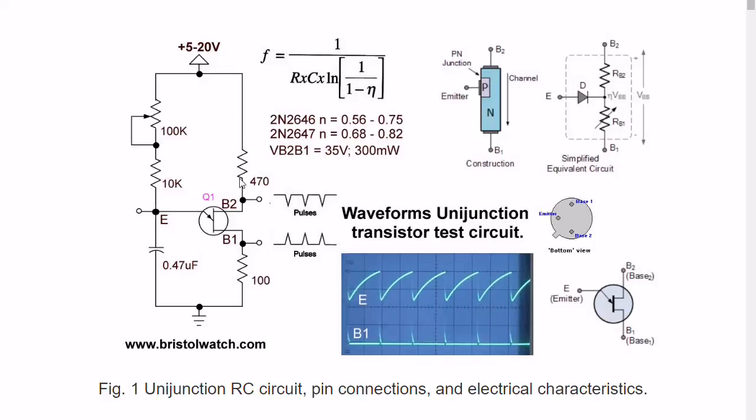Over here on your left is your typical unijunction trigger circuit. The trigger pulse is timed by a capacitor and a resistance, usually a potentiometer or fixed resistor, sometimes a constant current source. It has three connections known as emitter, base 1, and base 2. Note that base 2 is near the little tab.